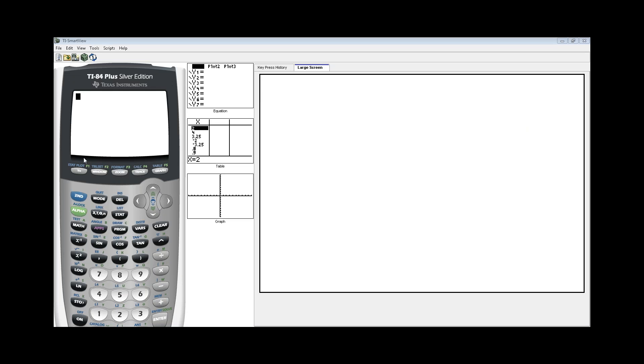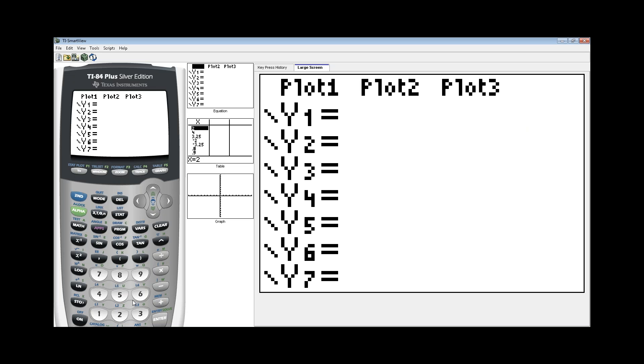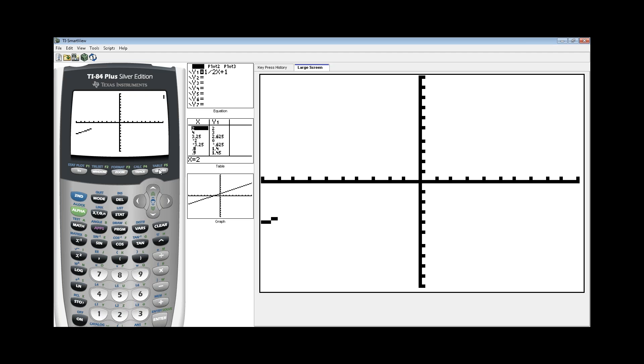On the graphing calculator, press y equals and then type in your first equation, which is 1/2 x plus 1. Using the cursor to go down, plug in the second equation, which is x minus 1, and then hit graph. We see our first equation and our second equation.